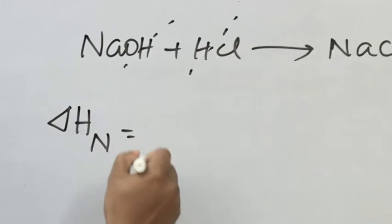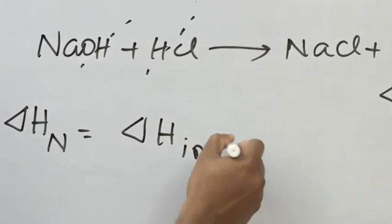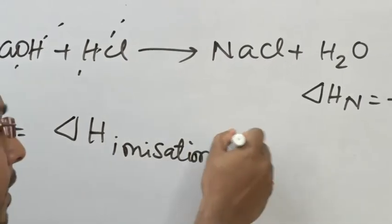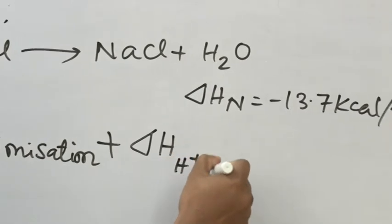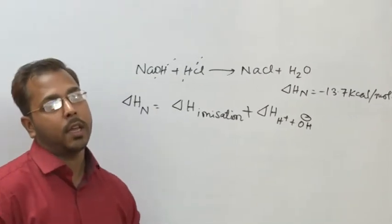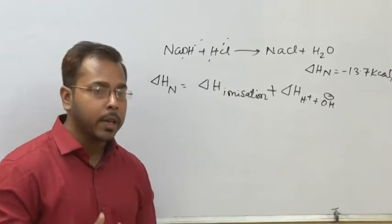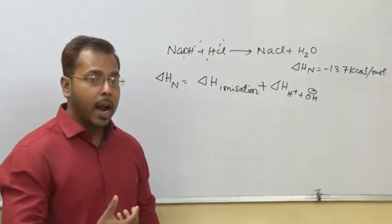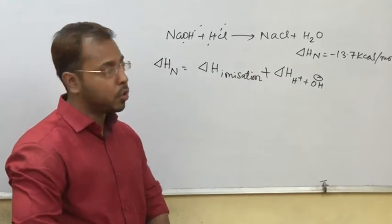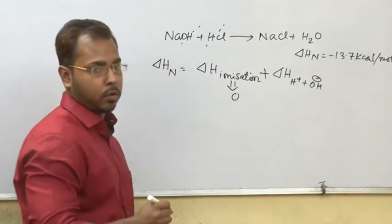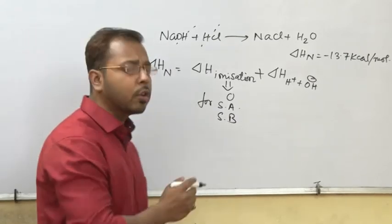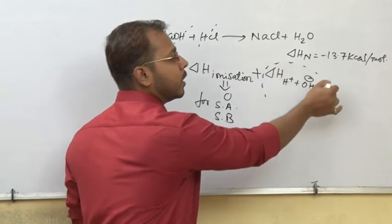The heat of neutralization consists of two parts: the heat required for the ionization of molecules to form ions, plus the heat required for the neutralization of H+ and OH-. The sum total of these terms is the heat of neutralization. But if the acid or base is strong, they are completely ionized in solution, so the ionization portion equals zero for strong acid and strong base.